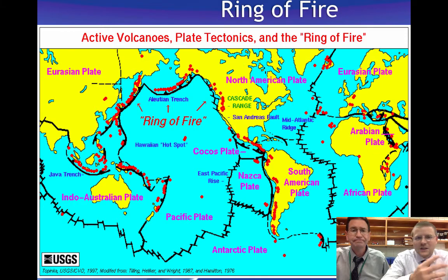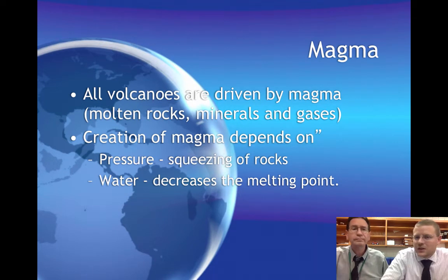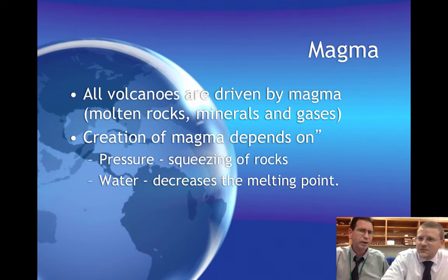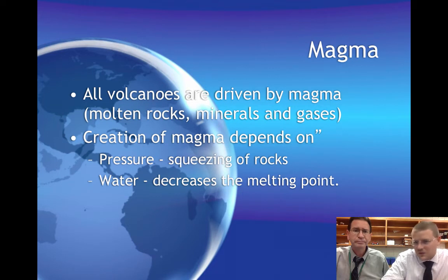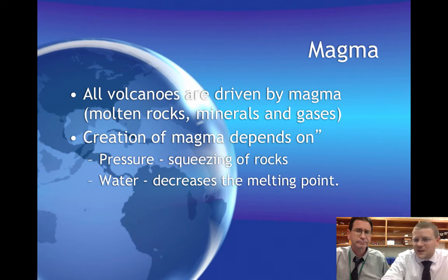What really drives a volcano is magma — when it's underneath it's called magma, and when it escapes it's called lava. It's the same thing — molten rock. We've got molten rock, minerals, and gases all mixed together. Depending on the pressures and different water mixed into that molten rock, you get different types of magma.